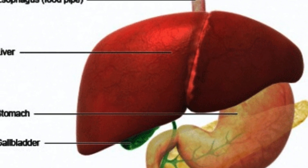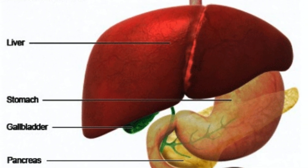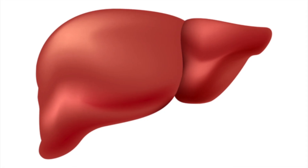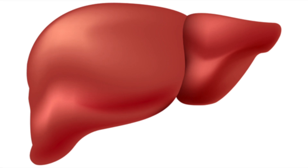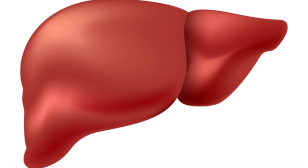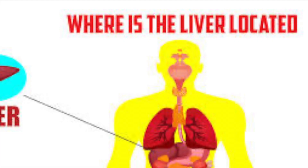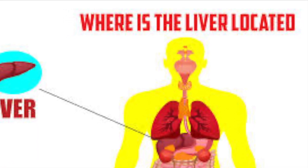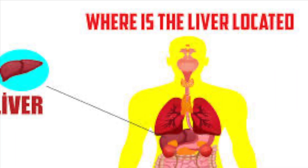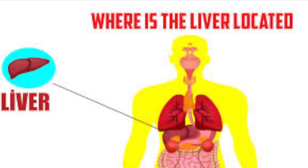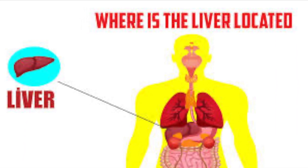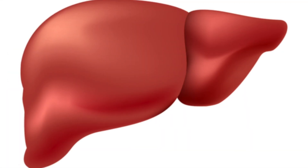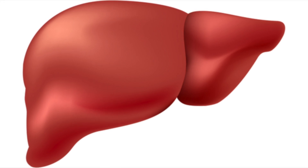Liver is the main organ of the metabolic system. It plays a vital role in the body's metabolic system. All the blood leaving the stomach and intestine passes through the liver. Liver is located in the upper right-hand portion of the abdominal cavity, beneath the diaphragm and on top of the stomach, right kidney, and intestine. Liver is shaped like a cone and is a dark reddish-brown organ that weighs about 3 pounds.